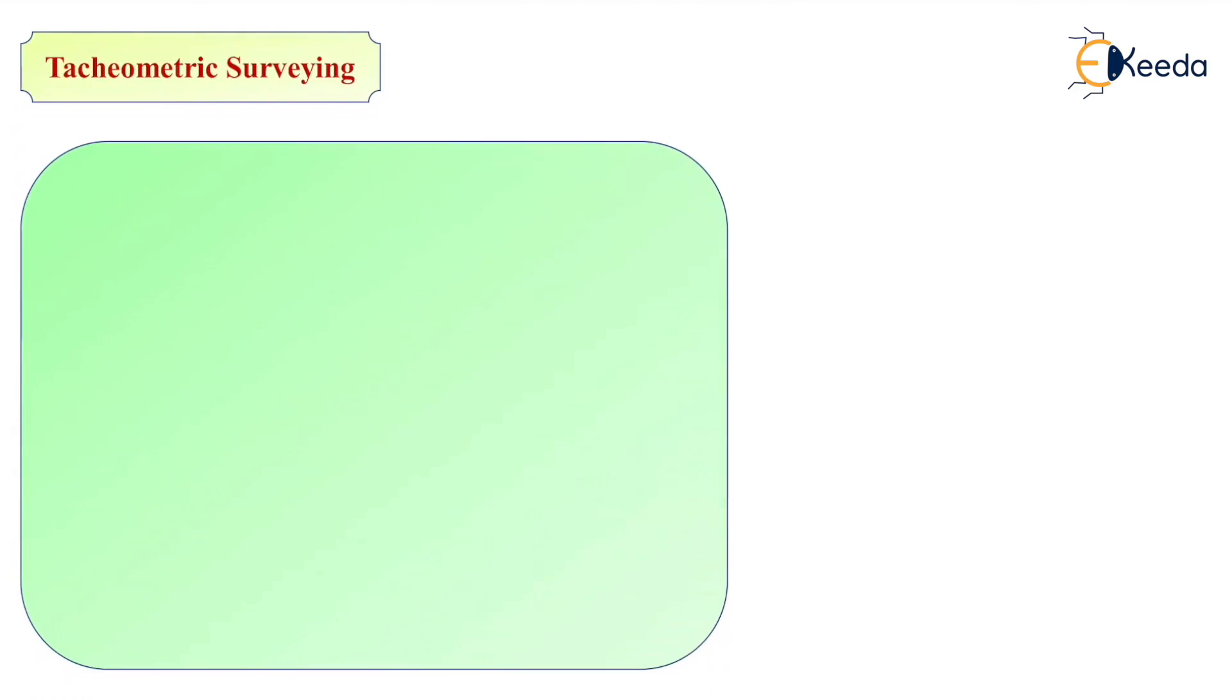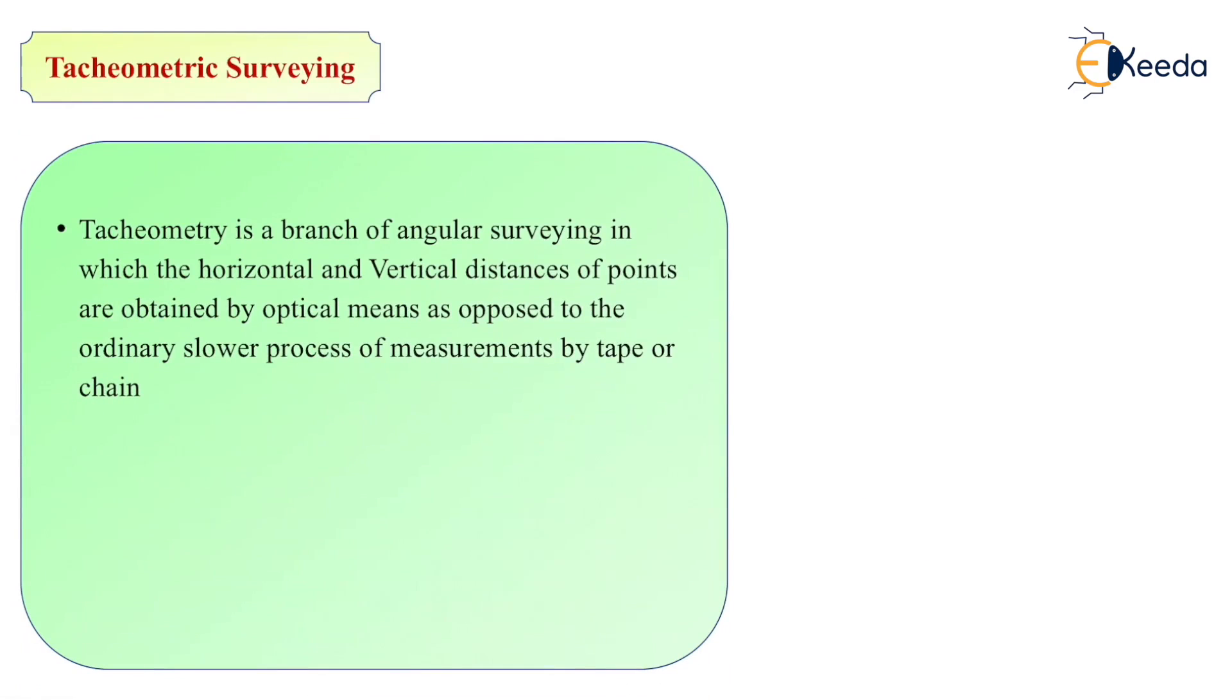Tachometer. Now what is tachometric surveying? It is a branch of angular surveying in which the horizontal and vertical distance of points are obtained by optical means, as opposed to the ordinary slower process of measurement by tape or chain. We can calculate horizontal and vertical distance by using tachometer.